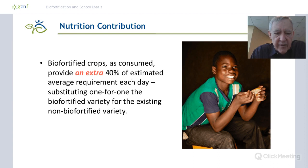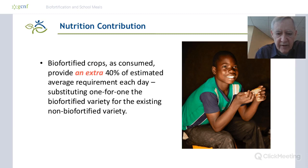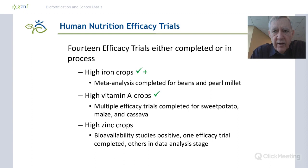Now about the nutrition activities. On any given day, if you substitute the biofortified crop for the non-biofortified crop, given the target levels we're breeding into the crops, you'll get an extra 40% of the estimated average requirements in the diet. Initially, the nutrition community was asking whether the nutrients would be bioavailable and whether there'd be a significant public health impact — so we've had to develop evidence on that.